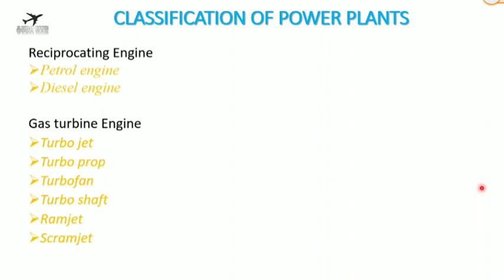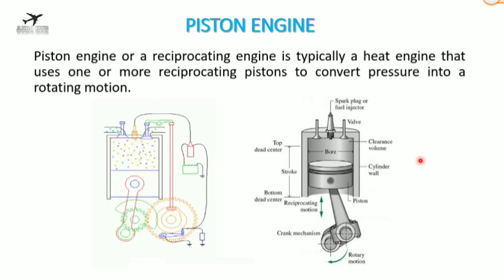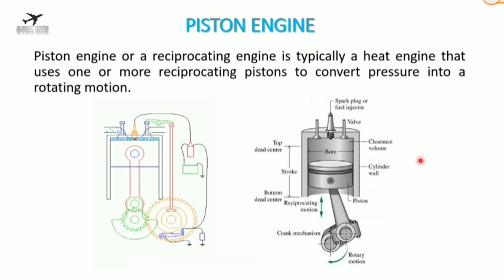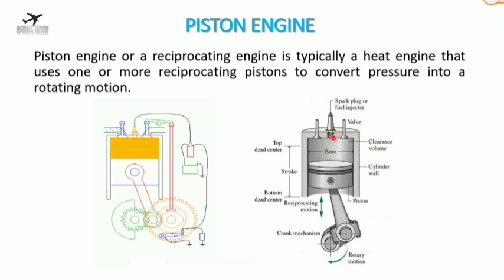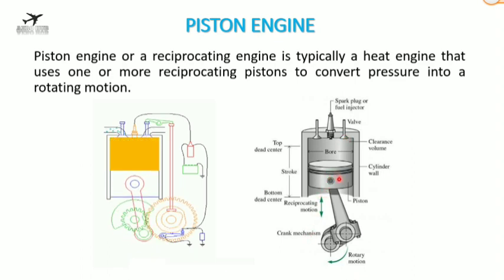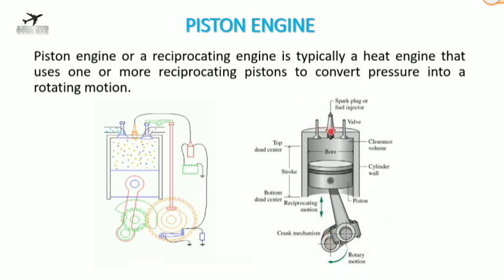A piston engine, or reciprocating engine, is typically a heat engine that uses one or more reciprocating pistons to convert pressure into rotating motion. Here we can see the parts of a piston engine: this is the piston, this is the connecting rod, and this is the crankshaft. These are the inlet valve and outlet valve.